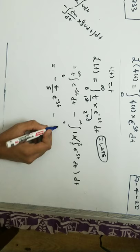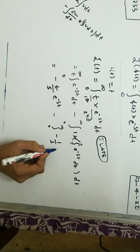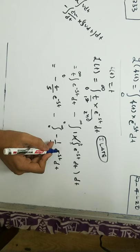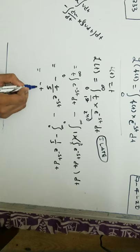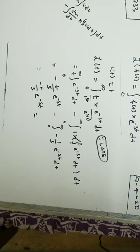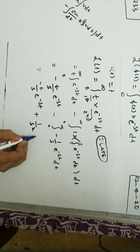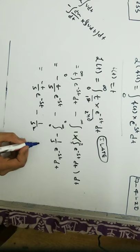By solving this, an important thing here is that integral of e to the power minus st is nothing but minus 1 by s times e to the power minus st. Now substituting here, we get from 0 to infinity minus t by s times e to the power minus st. Now taking the 1 by s outside and solving it, we finally get the result.